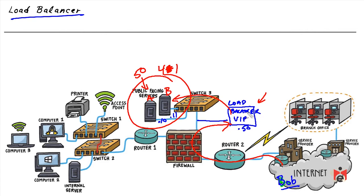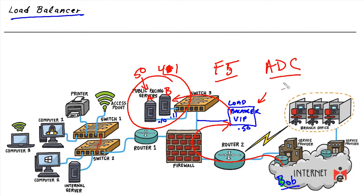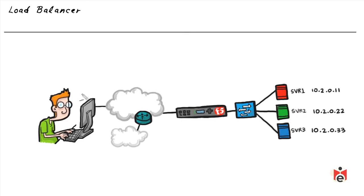More advanced load balancers can do more — for example, if a client comes from an Android browser, a specialized server for Android users can be targeted. Or if the client is using Chrome, Internet Explorer, or Edge, the load balancer can direct that session to a server optimized for that browser. Vendor F5 makes a product called Big IP, which they call an Application Delivery Controller (ADC), because it goes beyond load balancing to consider full application context before forwarding requests.